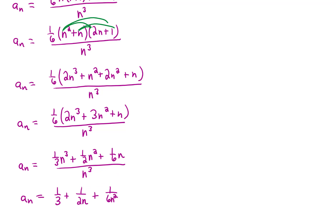And finally we can answer the question, what happens as n goes to infinity? Well, as n goes to infinity, these last two terms go to zero. So the sequence goes to 1 third, and that is our answer.